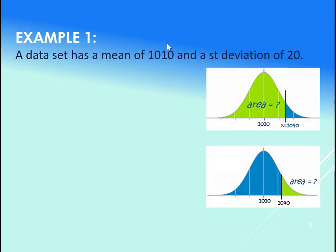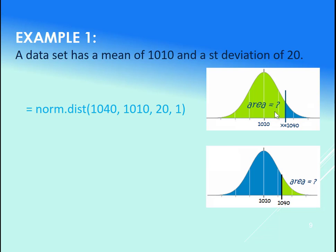Let's say we had a mean of 1010, a standard deviation of 20, and let's say for example, in the first case here we wanted to calculate the probability that x is below 1040.